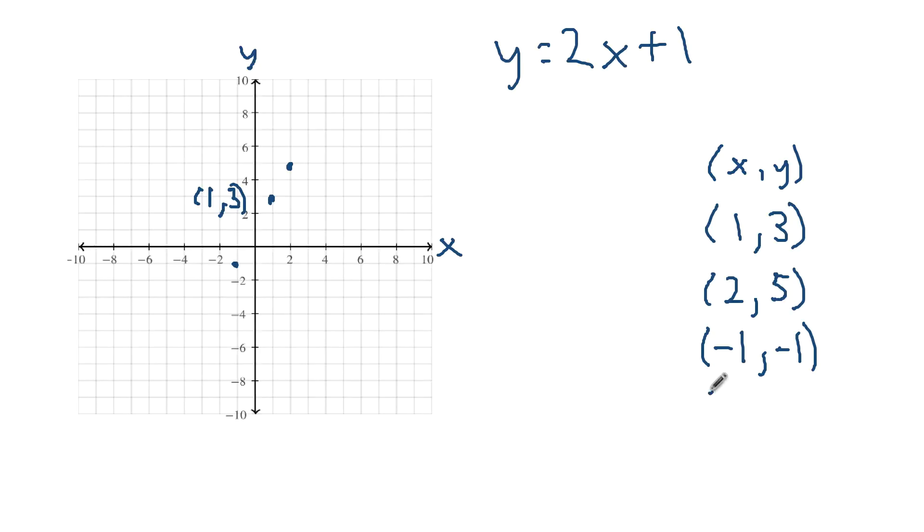Let's do a couple more. Let's say x is 0. Well, when x is 0, 2 times 0 is 0, plus 1 is 1. When x is 0, y is 1.